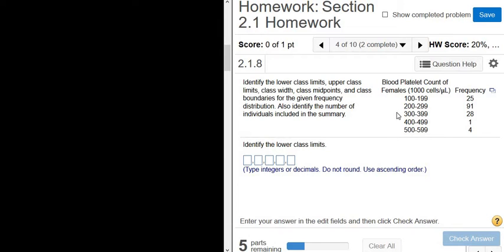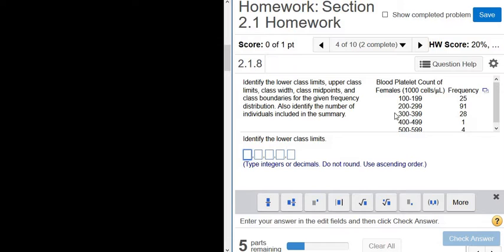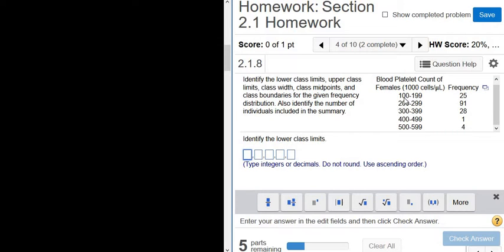In this video, we're given a frequency table and we have to answer various questions. The first question wants the lower class limits. The lower class limits are just these numbers that appear here, the 100, the 200, the 300, the 400, and the 500.